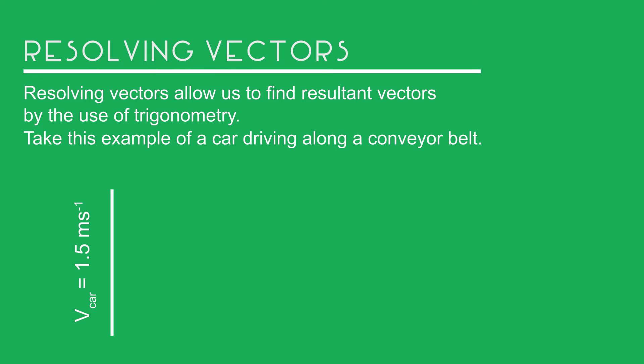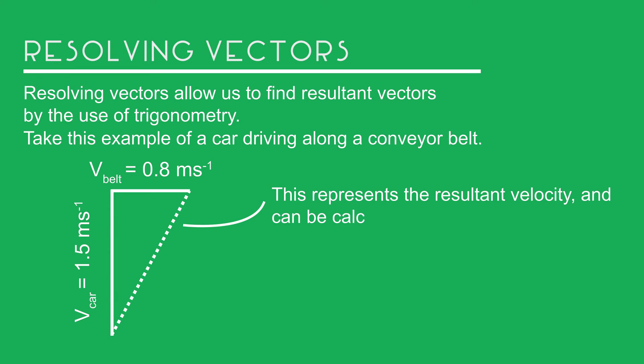Velocity of the car is 1.5m per second, whereas the sideways velocity of the conveyor belt is 0.8m per second. This represents the resultant velocity and this can be calculated by using Pythagoras.